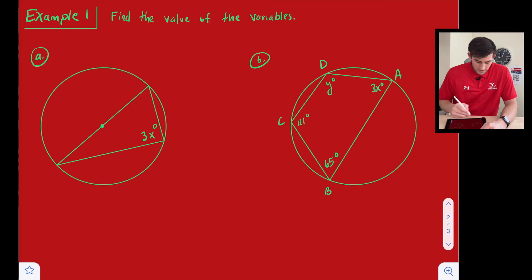So for A, we know that since this line right here, that chord right there, goes through the center of the circle and its endpoints are on the circle, that is the diameter of the circle, which means this angle right here is 90 degrees.